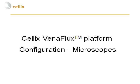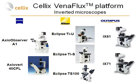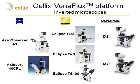The first part of the Vinoflux platform configuration is the microscope. We currently offer microscopes from three different manufacturers: Zeiss, Nikon, and Olympus, and we typically recommend different microscopes for different applications. Higher-end microscopes like the Axio Observer A1 or IX81 are particularly suited for looking at smaller cells like platelets. If somebody is interested in leukocytes, it is sufficient to use the Axio Vert 40 CFL microscope or the IX71 from Olympus.